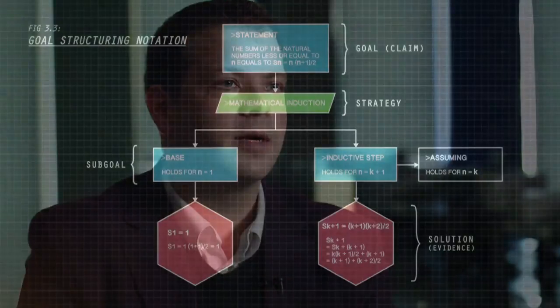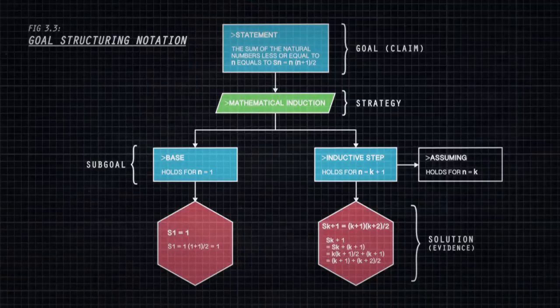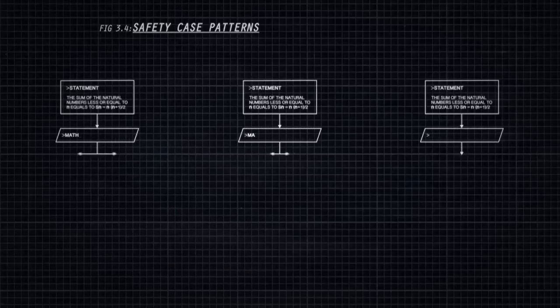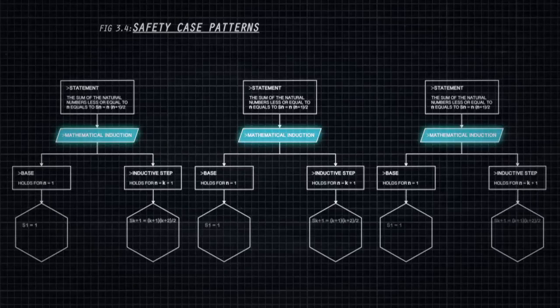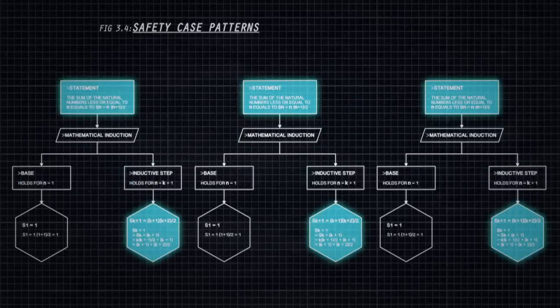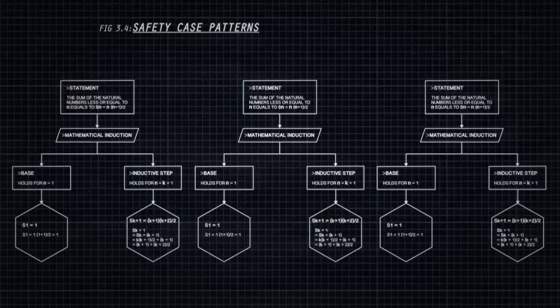The history and evolution of GSN started in the early 1990s when York first established and illustrated the concepts of goal structuring. Since that time, the work has continued to develop. In 1997, GSN was extended to support the description of safety case patterns — generic argument structures that can be reused in many safety cases.